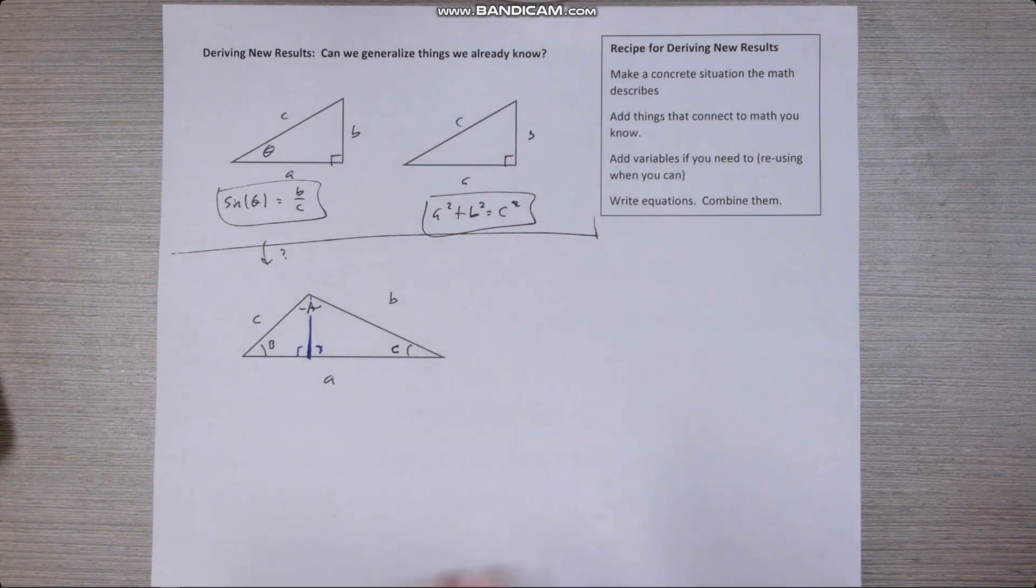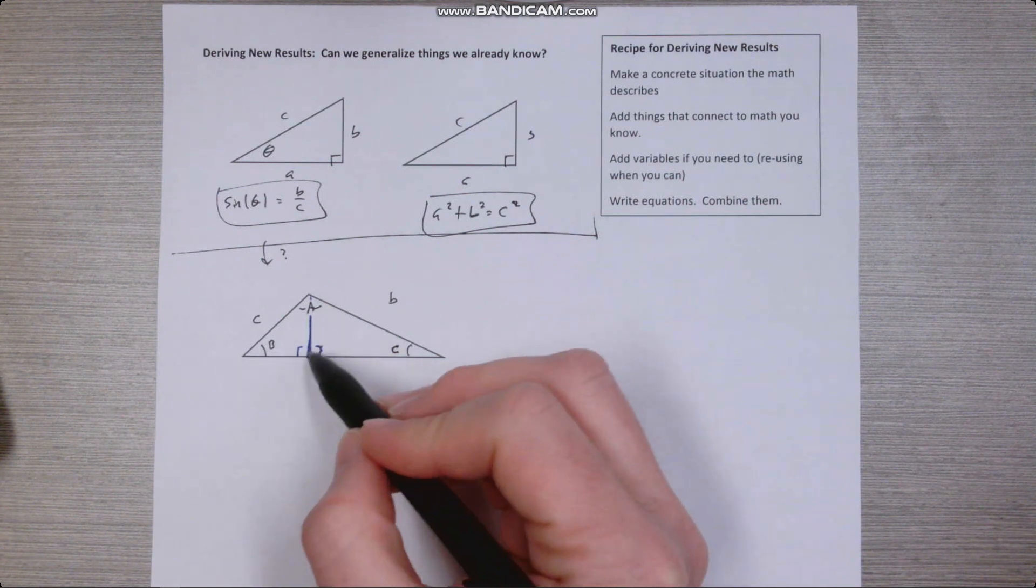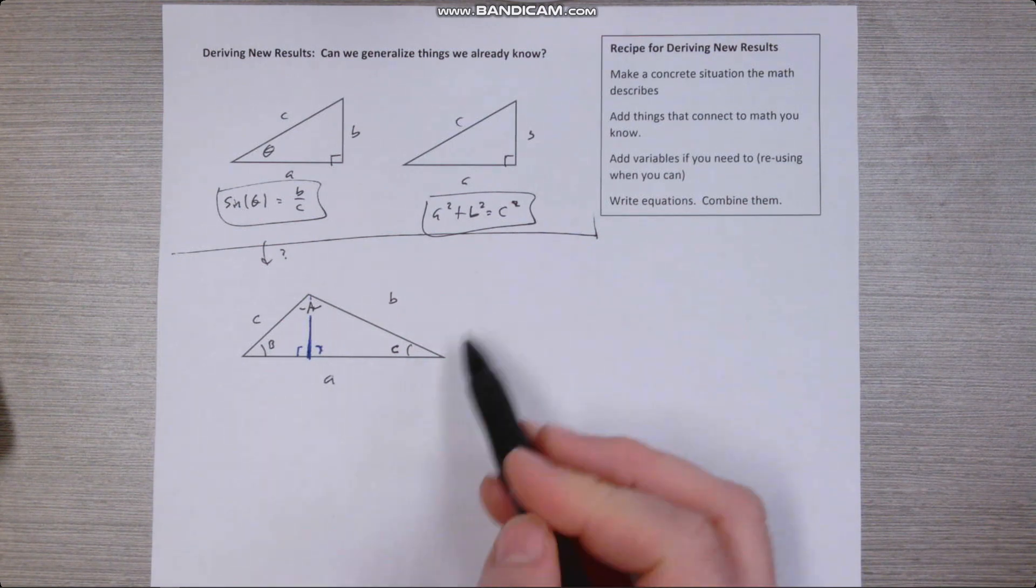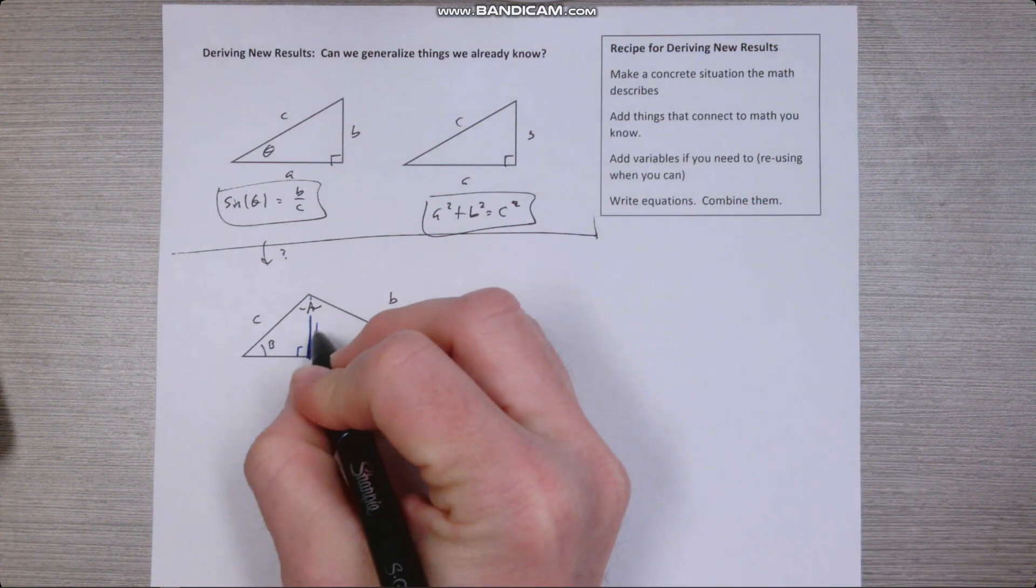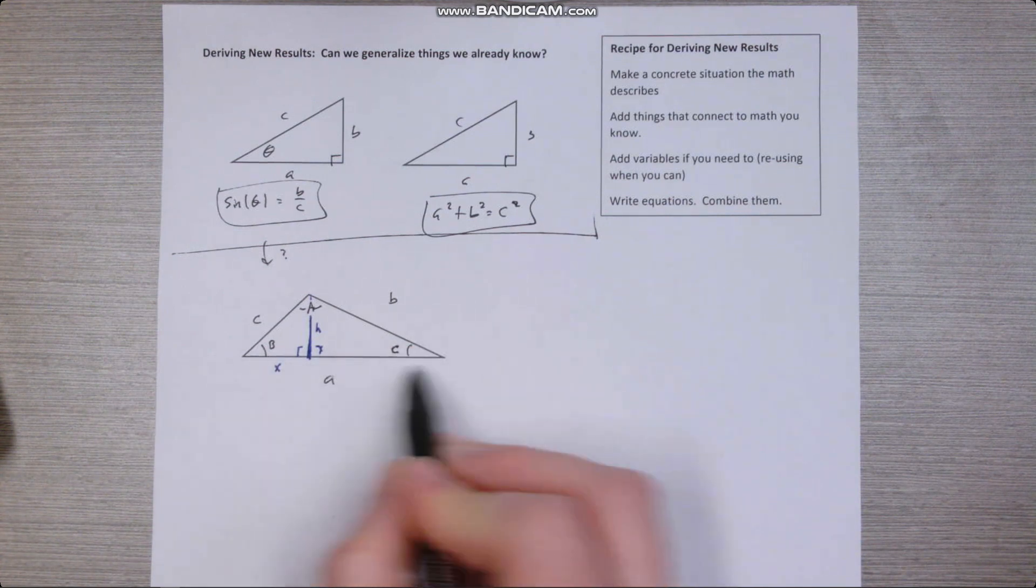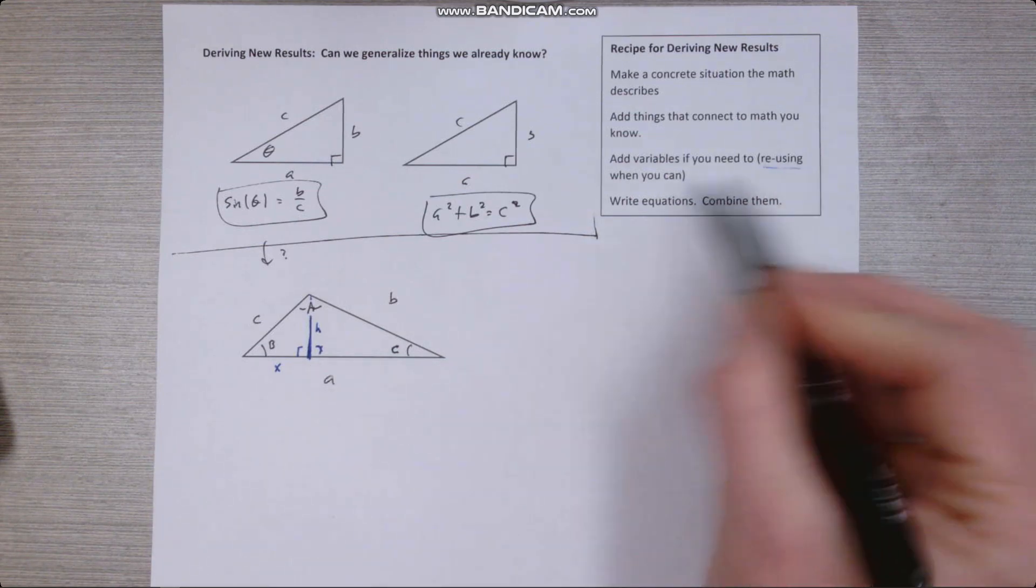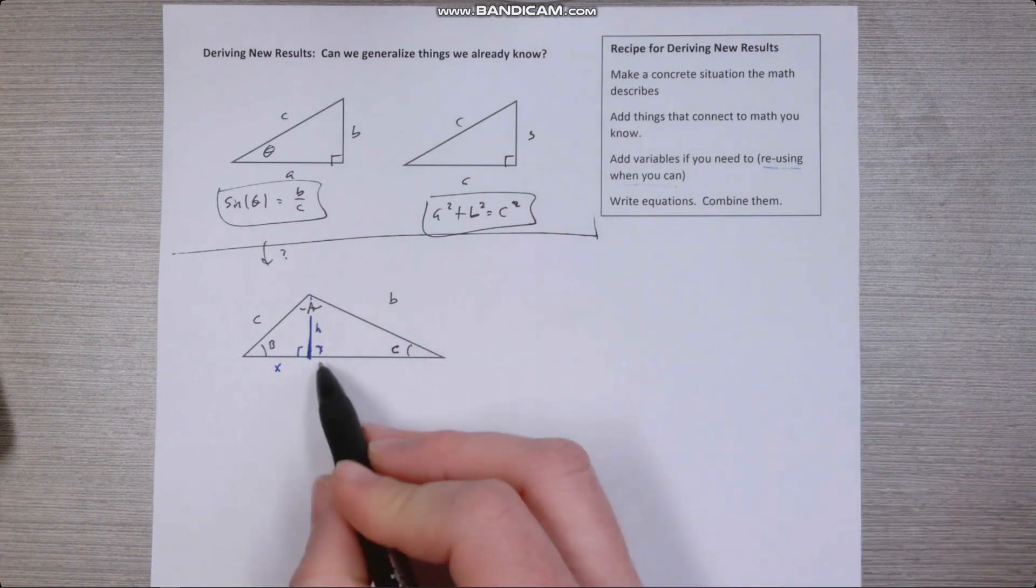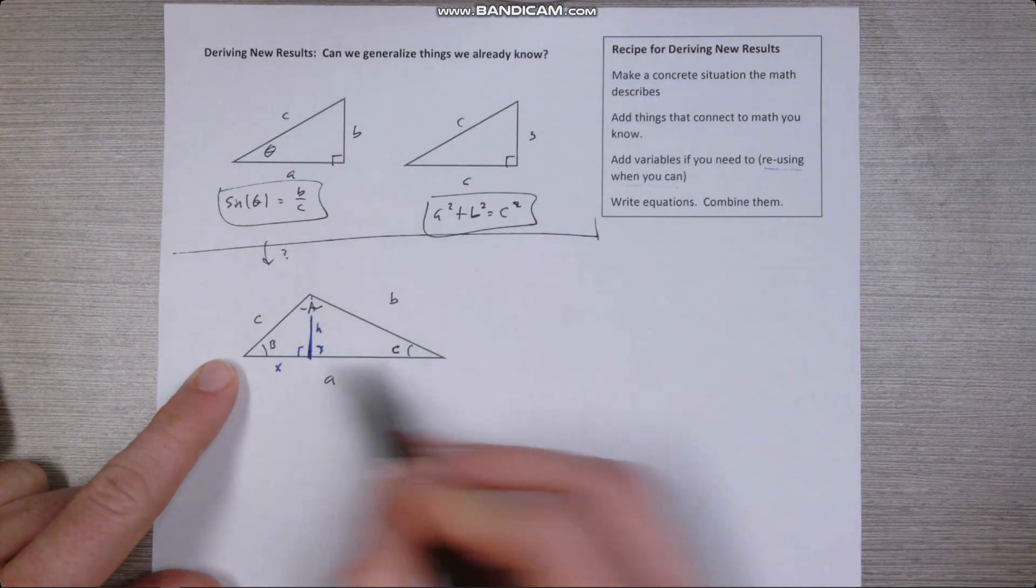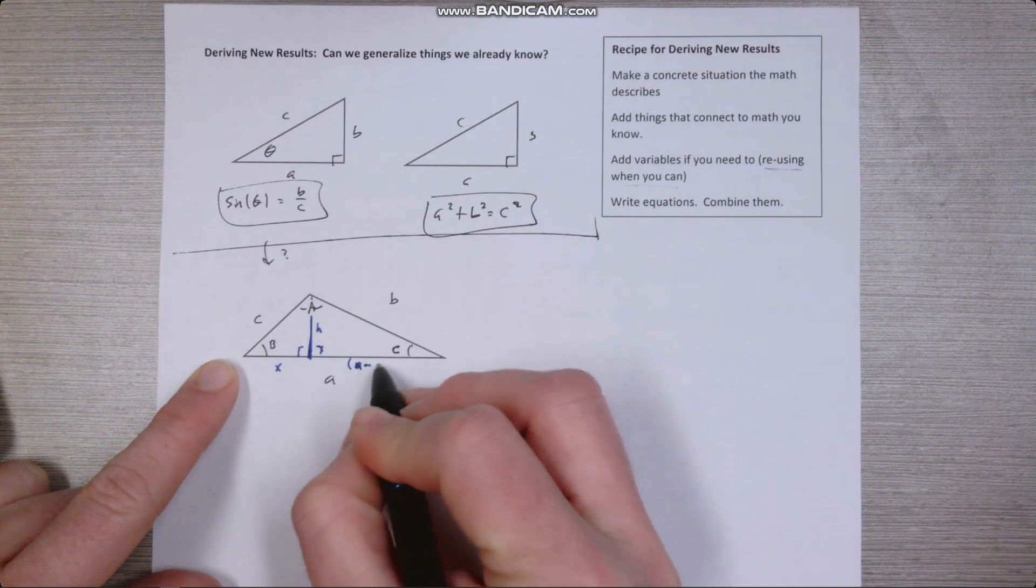Now, the problem is we can't really describe these right triangles without adding more variables because we don't have a variable for this height. We don't have a variable for these two separate pieces of this entire length a. So let's add in some new variables. We'll call this one h. We could call this here x. We could call this one a different variable like y or something else, but it's a good idea to reuse variables when you can. So rather than describing this one with a completely new variable, I'm noticing it is the full length a minus that length x. So I can describe this as a minus x.